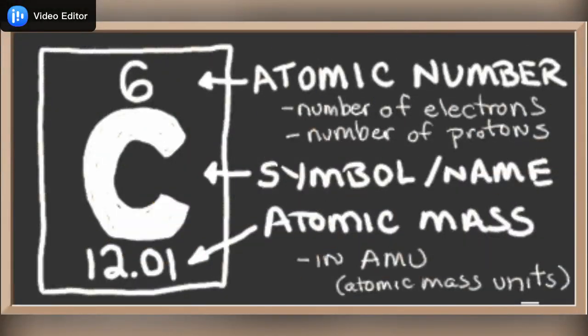Carbon is the element represented by the symbol C. It has the atomic number 6, therefore it has 6 protons and 6 electrons, and the atomic mass 12, which means it has 6 neutrons.